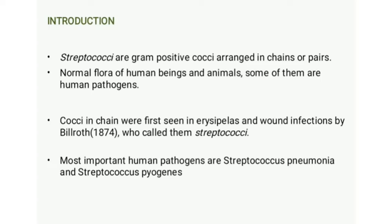Streptococci are gram positive cocci arranged in pairs or chains. They are part of the normal flora of humans as well as animals, but some are human pathogens. The most important human pathogens are Streptococcus pyogenes and Streptococcus pneumoniae.